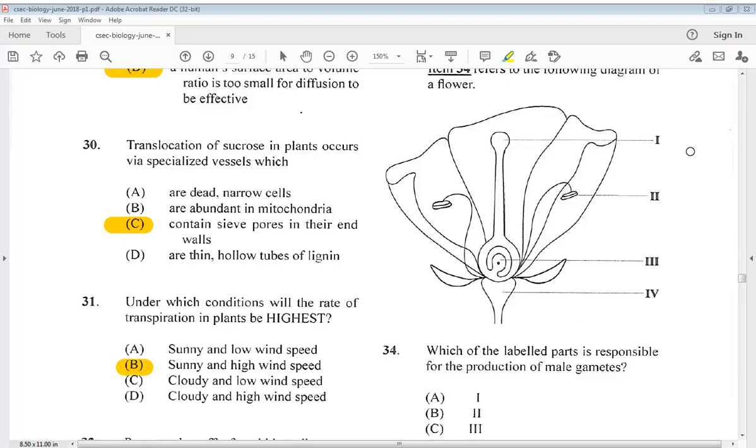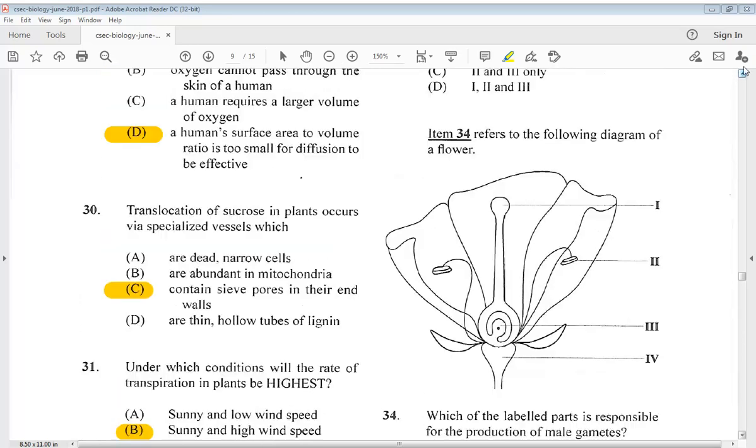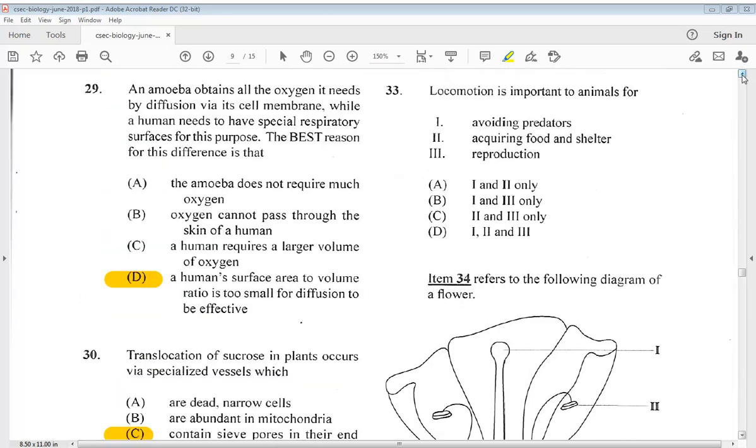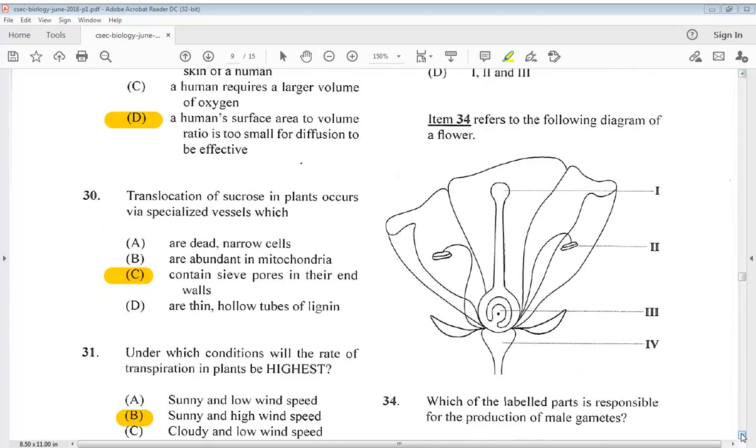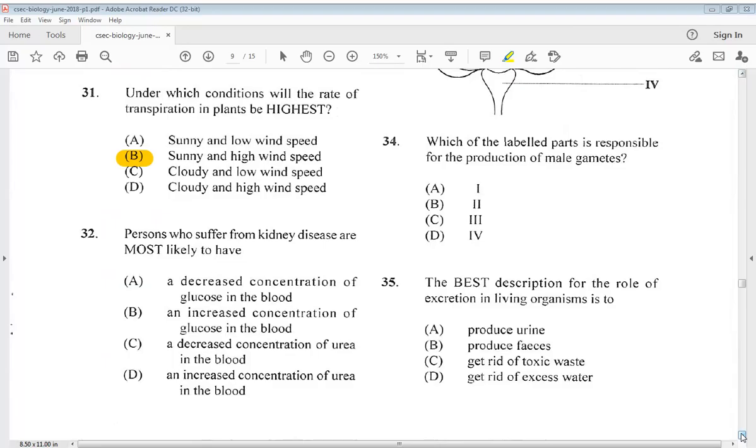Question 32. It says persons who suffer from kidney disease are most likely to have: A. A decreased concentration of glucose in the blood. B. An increased concentration of glucose in the blood. C. A decreased concentration of urea in the blood. Or D. An increased concentration of urea in the blood. The answer for 32 would be D.